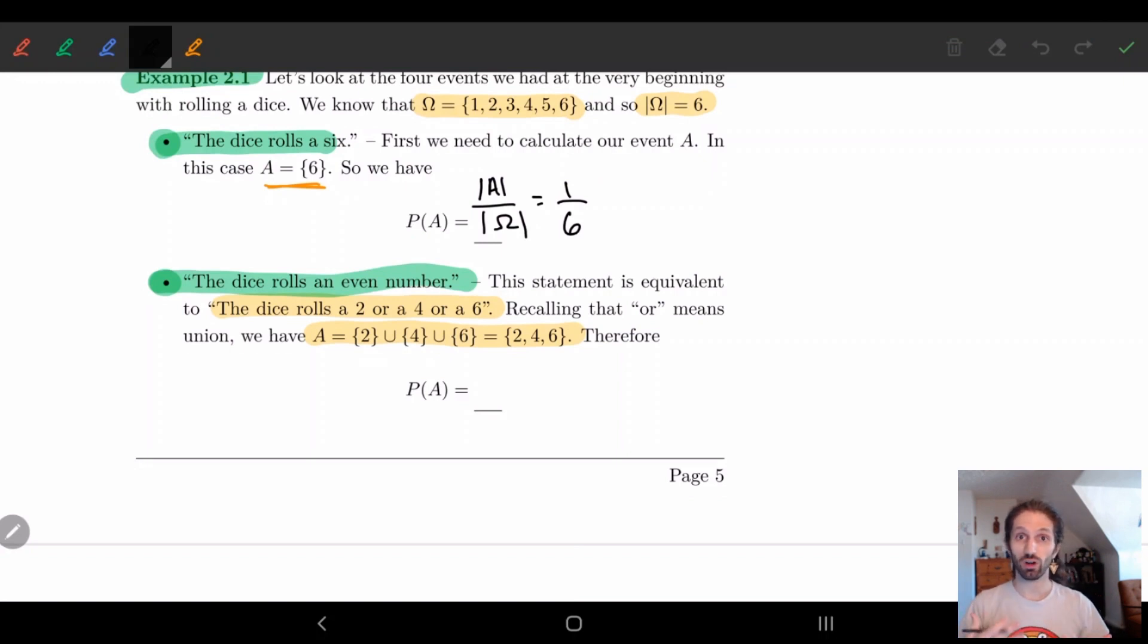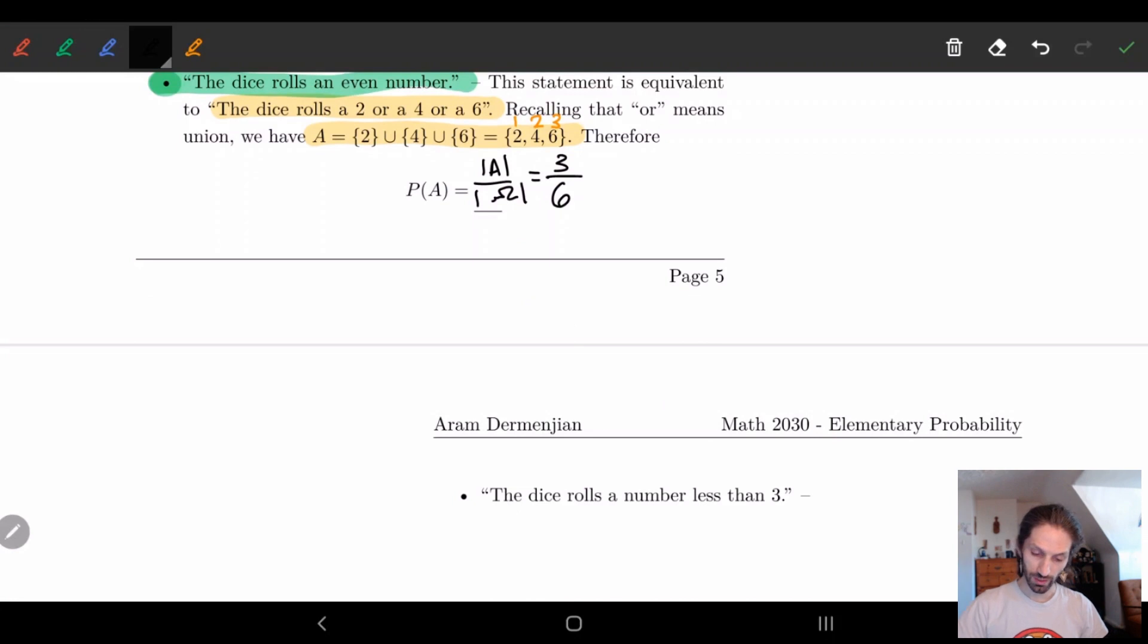So what does that give us probabilistically? Like what is our chance of rolling an even number? Well, in this case, this is |A| divided by |omega|, right? This is the definition. Our set A has, let's count this. We have one, two, three elements. So we have three on top. And six just comes from before. So done. So we have this one. That one's not too bad.